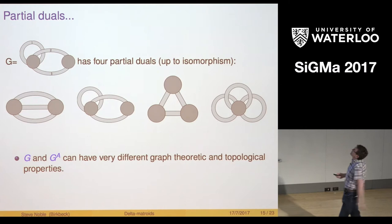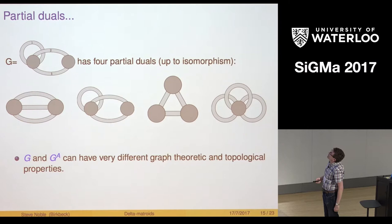Here's a quick example graph with those three edges. These are its partial duals up to isomorphism. Very different types of graphs, very different genus, all that kind of thing.